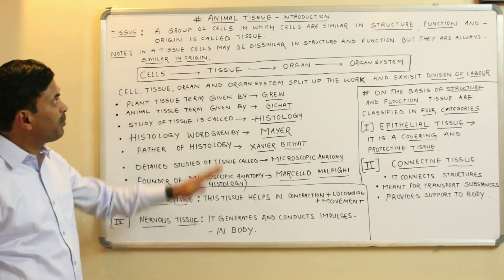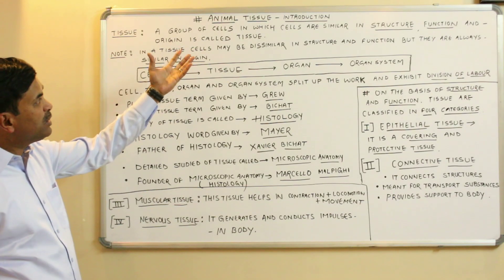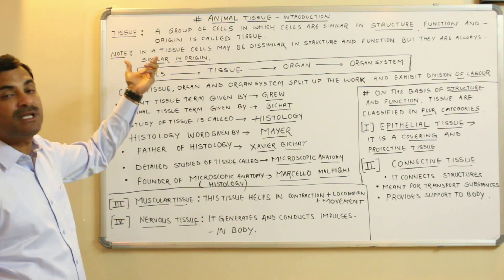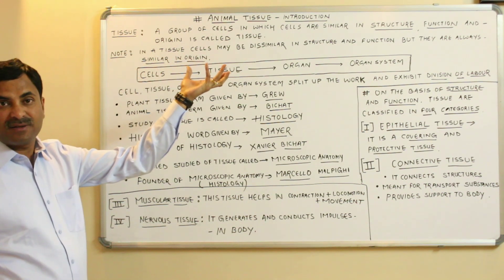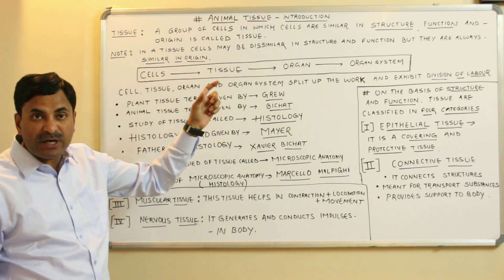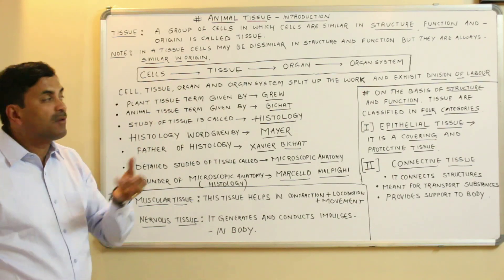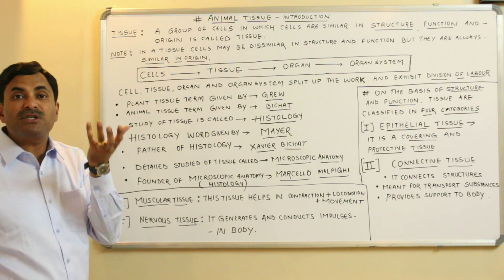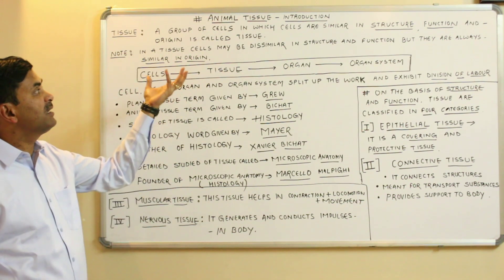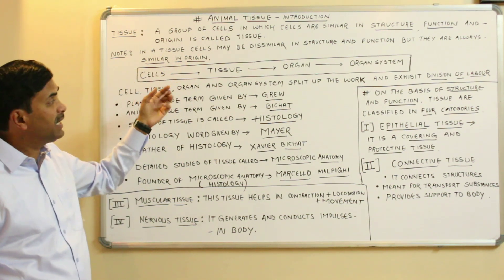Today we are going to start a topic related to animal tissues, and this is the introductory video. First, we must know what a tissue is. A tissue is a group of cells in which cells are similar in structure, function, as well as origin. This group of cells is called a tissue.